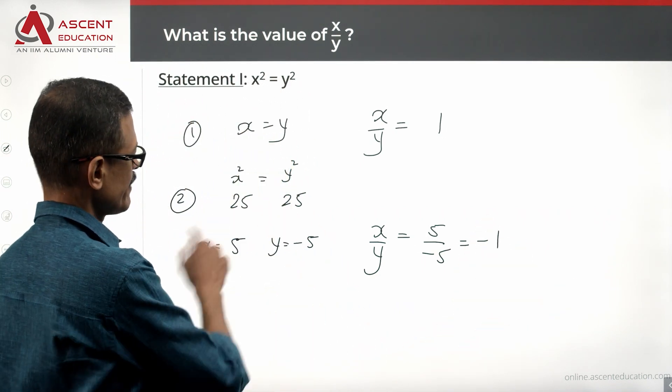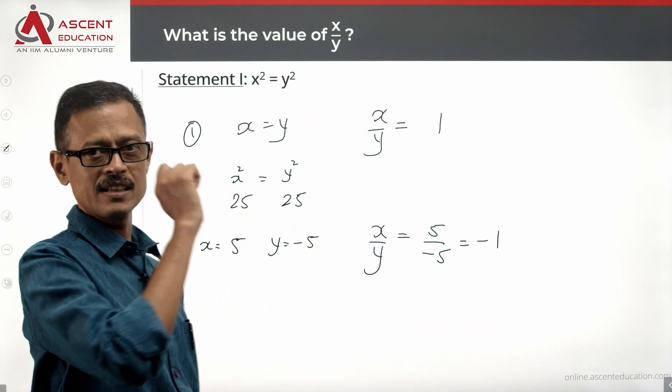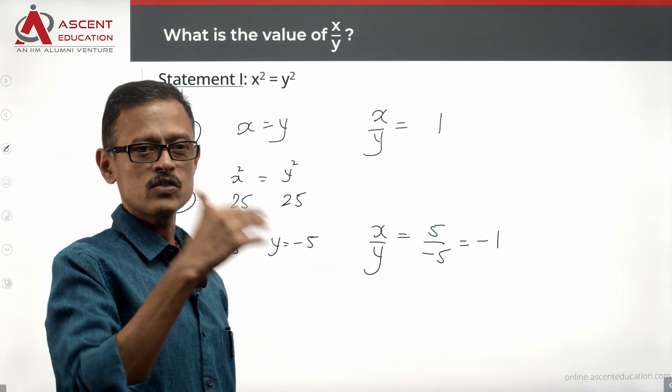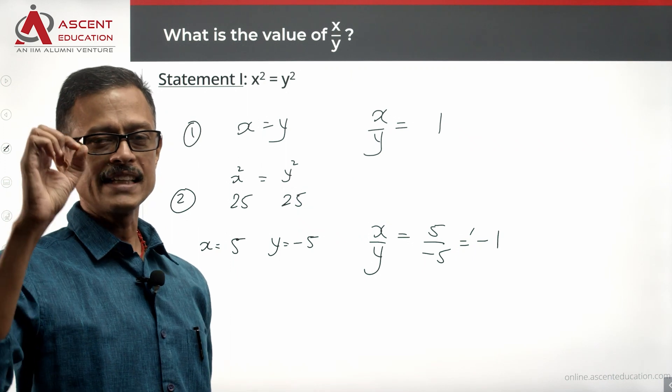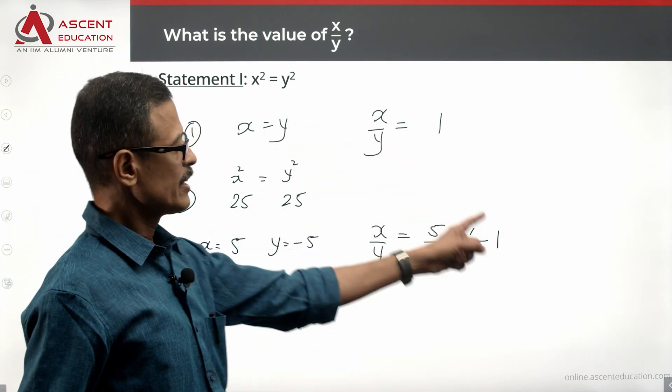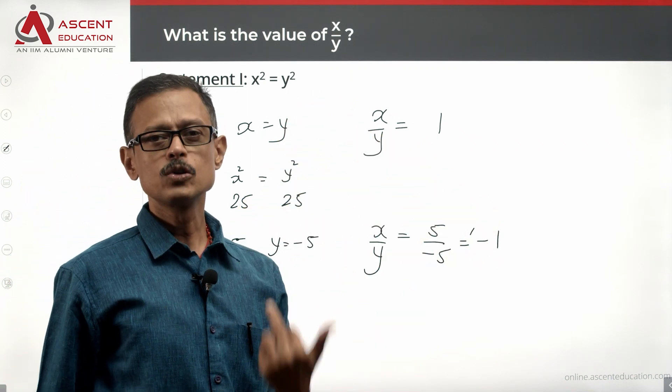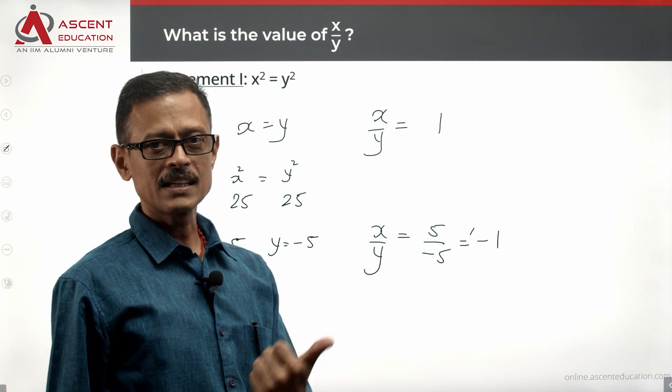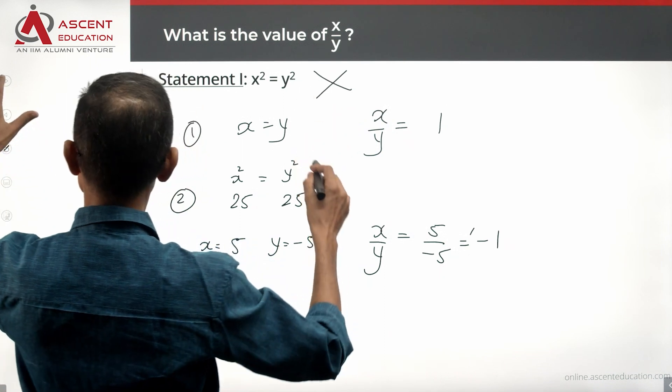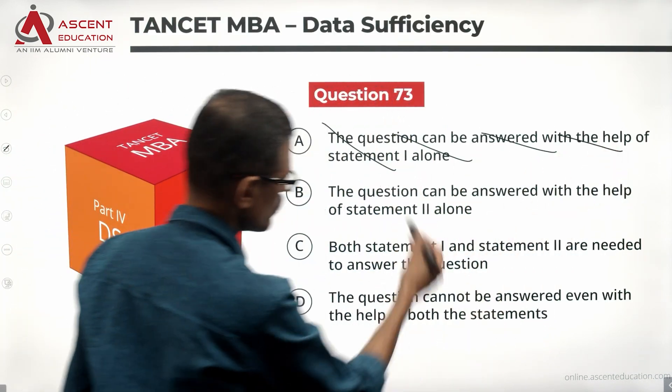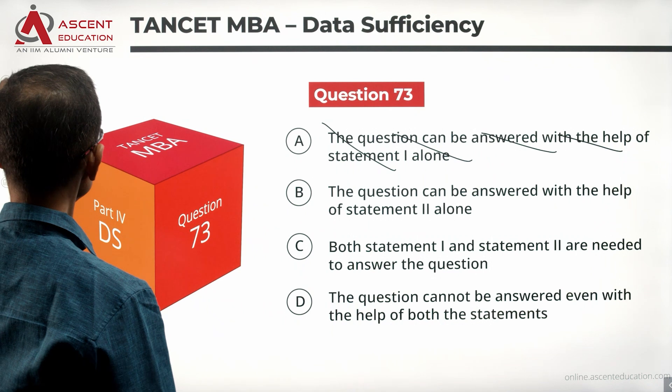If 5 and 5, the answer is 1. If minus 5 and minus 5, the answer is 1. If 5 and minus 5 or minus 5 and 5, the answer is equal to minus 1. So x by y is either 1 or minus 1. Do we have a unique value for x by y? No, two possibilities exist. With statement one alone, we are not able to find a unique value for x by y. Statement 1 alone is not sufficient. Rule out answer option A.